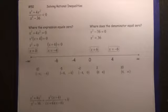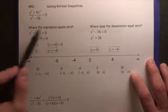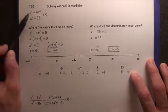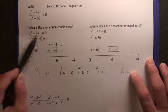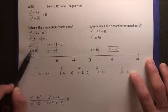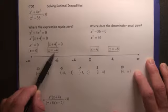Problem 50, solving rational inequalities. Let's take a look. Where is the expression equal to 0? Well, the numerator would be 0, therefore we're going to factor. We get x squared times (x + 4) equals 0. There's two zeros: x = 0, x = -4.